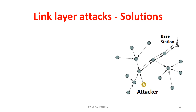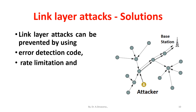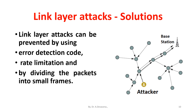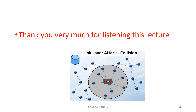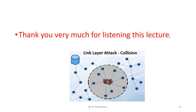Link layer attacks solution. Link layer attacks can be prevented by using error detection codes, rate limitation, and by dividing the packets into small frames. Thank you very much for listening to this lecture. If you like this lecture, kindly share this video with your friends.